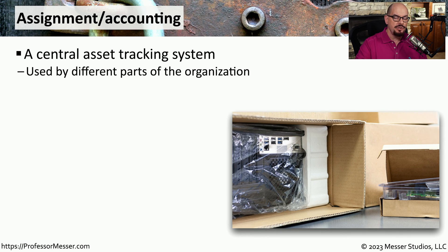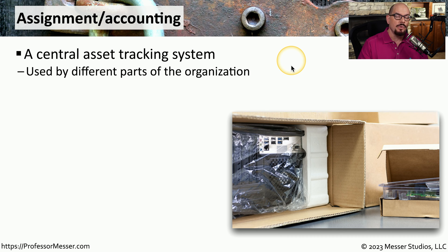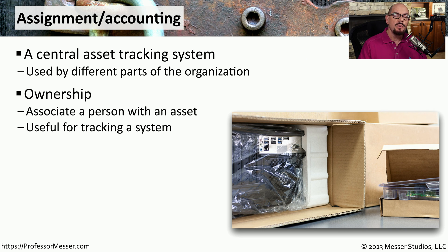If the company is purchasing a tangible product, they'll receive those goods and then add them into a central asset tracking system. This is a way to manage all of the assets received by the company and track them for the entire lifecycle of that particular product. The first step is understanding who has control of that particular asset, and they're assigned ownership in this asset tracking system. So if someone receives a laptop, the laptop is put under their name, and if we need to make any changes or updates to that laptop, we visit that user to gain access to the asset.